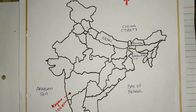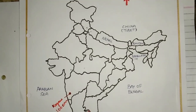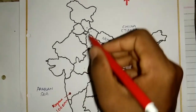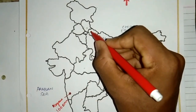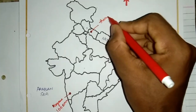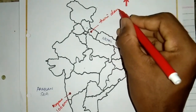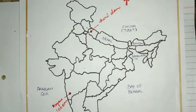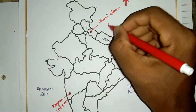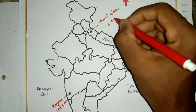The second one is the Tehri Dam. The Tehri Dam has a capacity of 2,400 MW, making it one of the larger hydropower plants.